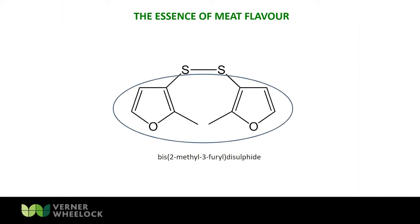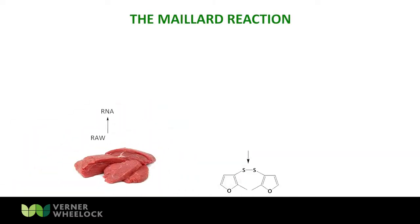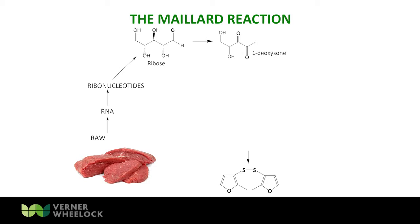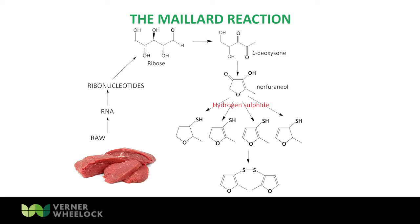Cysteine is one part of it. Back to the molecule — where does the carbon skeleton come from? Here we look at the Maillard reaction, starting with raw meat. Raw meat contains RNA (ribonucleic acid), which breaks down to ribonucleotides with enzymes and liberates ribose. Ribose reacts in the Maillard reaction to form a 1-deoxyosone — where the C1 carbon has no oxygen function. This cyclises to form norfuraniol, which is then hijacked by hydrogen sulfide to form the methyl furan thiols that are the root of meat flavor, and these can then be oxidized to the dimer.